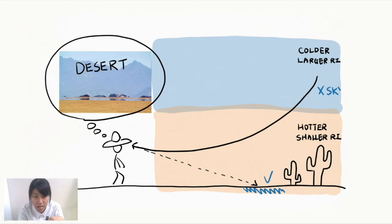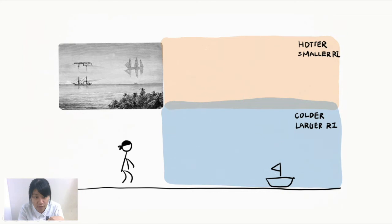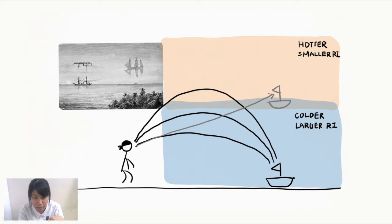However, Fata Morgana is observed in high-latitude ocean areas, which has a temperature distribution exactly opposite to that of the desert, meaning colder air at the bottom and warmer air at the top. This time, light bends downwards in a convex manner and forms an uplifted image called a superior mirage.